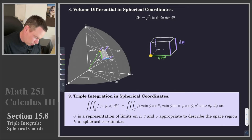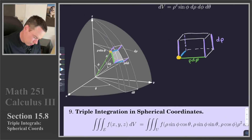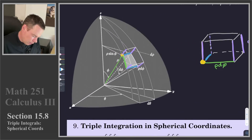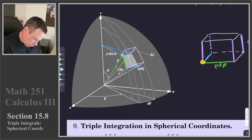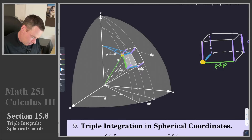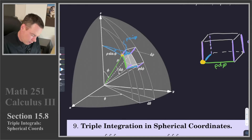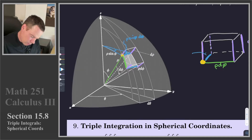Now, what about the other direction — the blue direction? In our picture, we've got this blue line segment. If I stare at this sector of a circle and imagine moving that blue line segment sweeping out over a change dθ, then the length of that arc is the radius times the angle swept through. The radius here is ρ sinφ, and the angle is dθ. So this blue segment is ρ sinφ dθ.